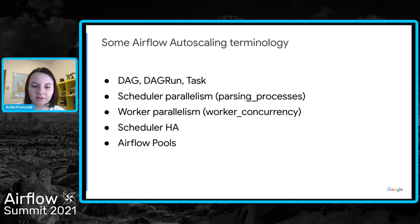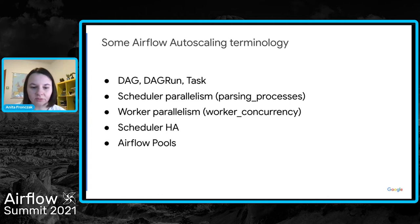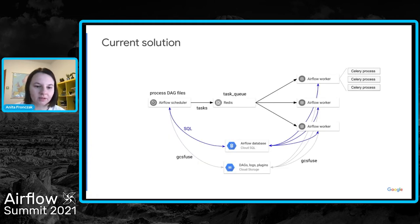Airflow 2.0 introduced scheduler high availability, allowing more than one instance of the scheduler. Airflow also offers a pools mechanism, which can be used to limit execution parallelism on an arbitrary set of tasks. When you create a pool you give it a name and assign a number of worker slots. The Cloud Composer auto scaling solution does not use pools but does not prevent you from using them — it is an additional mechanism.